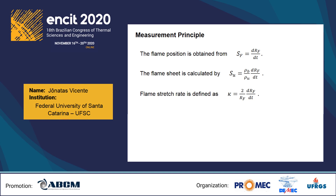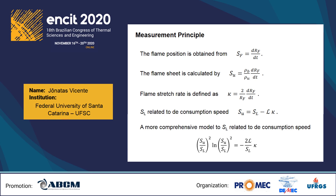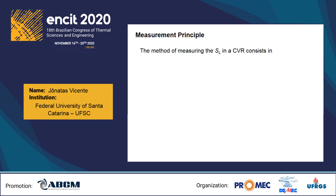For stretched flames, the laminar flame speed has been related to the consumption speed where L is the Markstein length. This equation is known as the linear model. In a more comprehensive model, the laminar flame speed has been related to the consumption speed by an equation known as the non-linear model. In summary, the method of measuring the laminar flame speed in a constant volume reactor consists of the following steps.